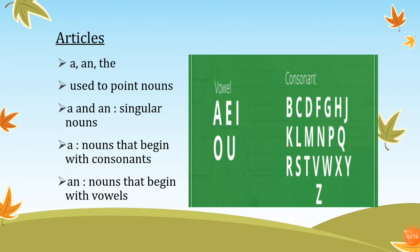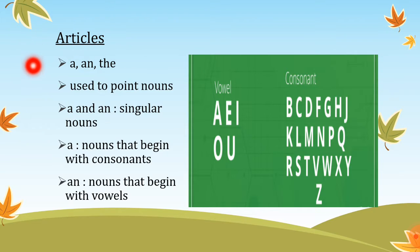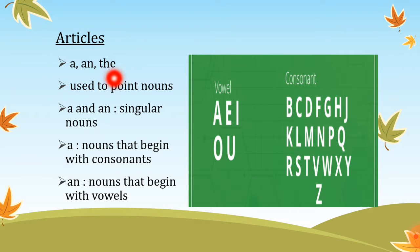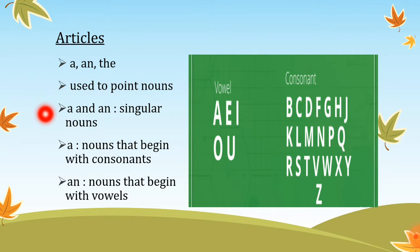I hope all of you are in the best state of health. Today we're going to start a new grammar topic. The topic is articles. We're going to look at three different articles, which are 'a', 'an', and 'the'. All the articles are used to point out nouns. Now we're going to look at the difference between the usage of these three articles.